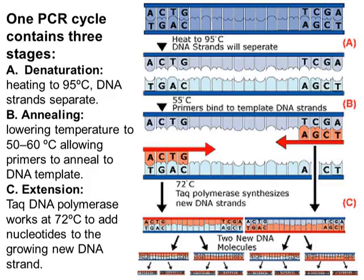At 95°C, all double and triple bonds are broken — unwinding and denaturation — leaving two single strands as templates. During annealing, the temperature is lowered to allow primers to hybridize — that is, form complementary base pairing — to the template strands.